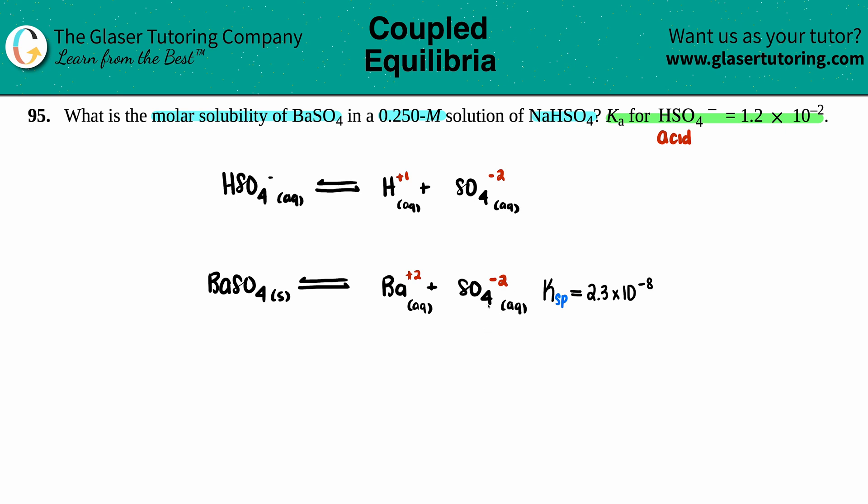And now, let's write out the Ka value here. Ka is equal to 1.2 times 10 to the negative 2nd. And maybe, if we can, we can write this out as what the Ka expression would be. Because you know that that's coming. So the Ka is products over reactants. It would be H plus times SO4 2 minus, divided by HSO4.